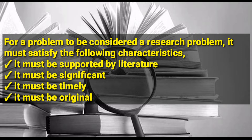For a problem to be considered a research problem, it must have the following characteristics. First, it must be supported by literature. This means that a researcher must have read enough literature to be able to ascertain the existence of a problem. This is based on findings as well as recommendations of previous researchers — you must have read books, newspapers — to know that the problem is really there and to base your work on what other researchers found and recommended.